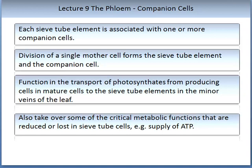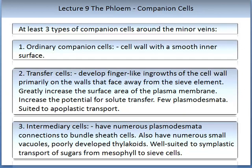Each sieve element is associated with one or more companion cells. Division of a single mother cell forms a sieve tube element and the companion cells. Companion cells function in the transport of photosynthates from producing cells in mature leaves into the sieve tube elements in the minor veins. They also take over some critical metabolic functions that are reduced or lost in the sieve tube cells, for example supplying ATP, the energy compound the plant uses. These companion cells come in at least three types around the minor veins.